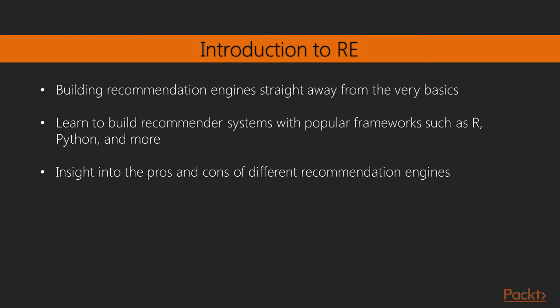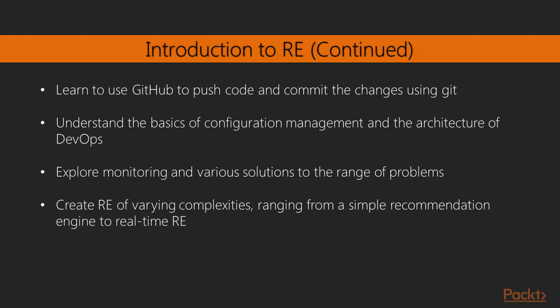This video starts with an introduction to recommendation systems and its applications. You'll then start building recommendation engines straight away from the very basics. As you move along you'll learn to build recommender systems with popular frameworks such as R, Python and more. You'll get an insight into the pros and cons of different recommendation engines and when to use which recommendation. You'll learn to use GitHub to push code and commit changes using Git. Moving on, you'll understand the basics of configuration management and the architecture of DevOps. You'll see how to take care of deploying the code into Shiny servers, then explore monitoring and various solutions to the range of problems we might face.